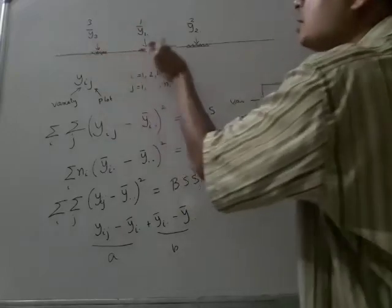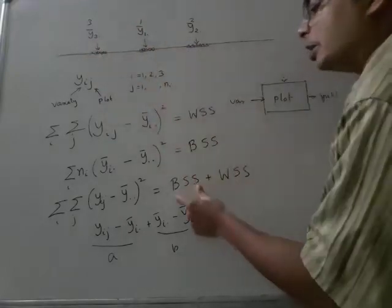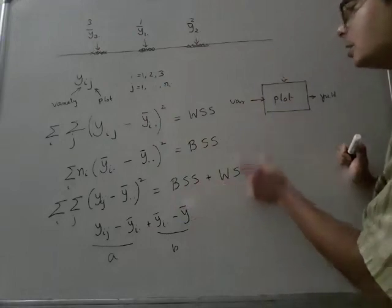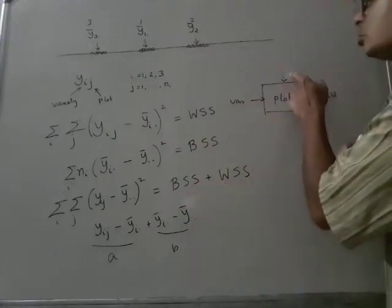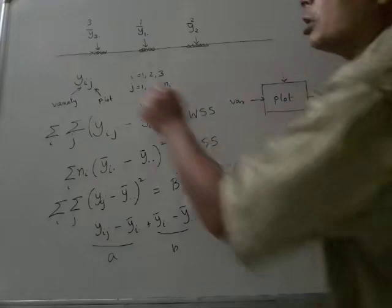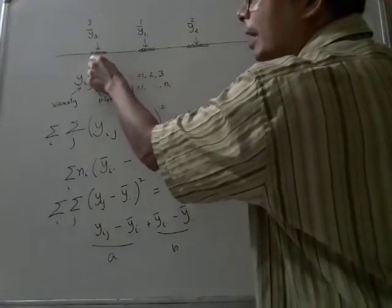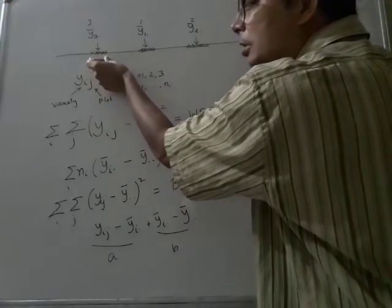Because the three varieties are different, that is why you get BSS. And within sum of squares is measuring the variability that is introduced by the random error. Because why is this point differing from that point? That is not because of variety because both of them come under the same variety.